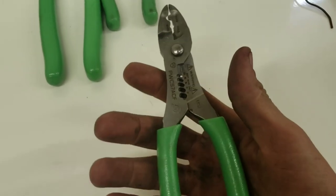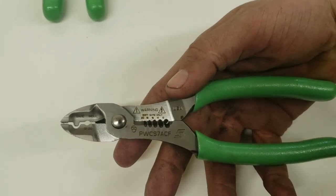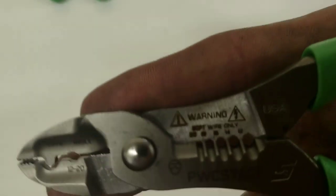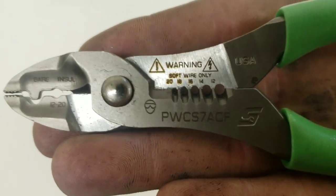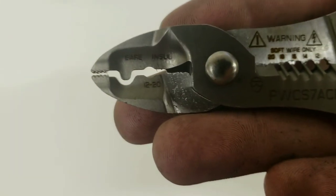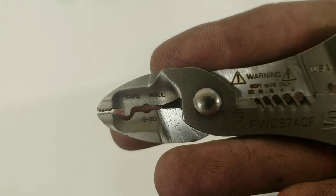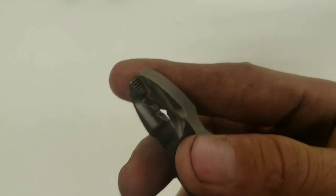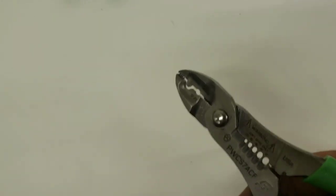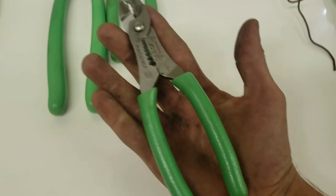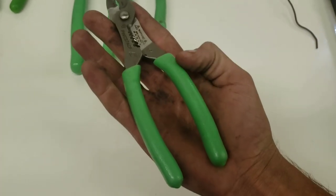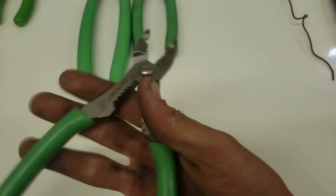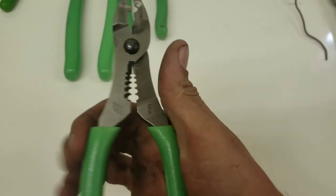Next are the wire strippers, the PWCS7ACF. These strip 20, 18, 16, 14, and 12 gauge wire, and have bare and insulated crimpers. They also have a groove for grabbing wire. Carlisle has the same exact pliers, just different grips. I have the Carlisle ones on my service truck and these in my shop box. Made in USA.